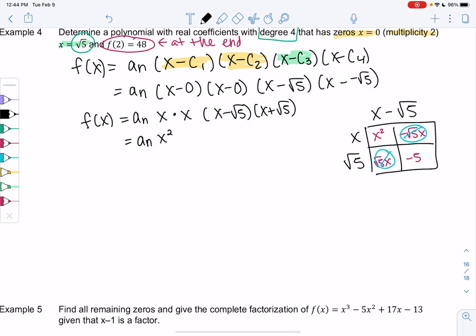So we have a_n times x squared times x squared minus 5. And then I'm just going to multiply it out so it looks more like a polynomial. So we get a_n, we get x to the fourth, and then we get minus 5x squared. So now we need to figure out what a_n is.